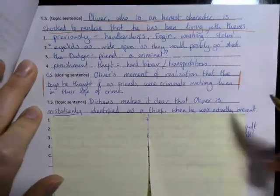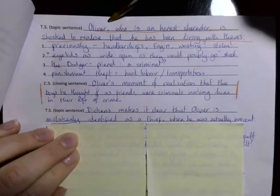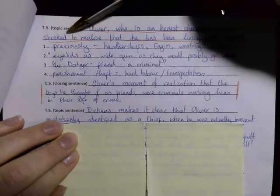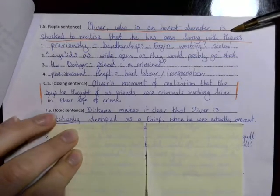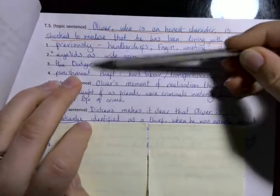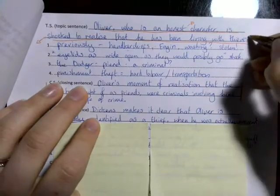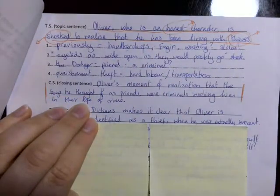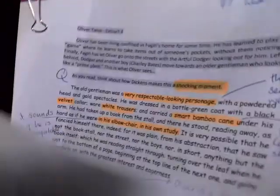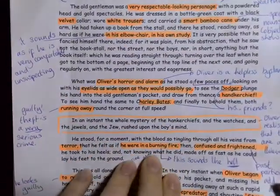It's a really generic outline but the idea is to get you to think about the parts of the paragraph that match. You'll notice the topic sentence is going to mirror the closing one. Let's give it a read. So this is my example. In this topic sentence I've been pretty specific: 'Oliver who is an honest character is shocked to realize he has been living with thieves.' Then I've got to find four things that would support the idea that he is honest and that he's now shocked and that they are thieves.